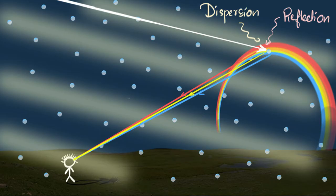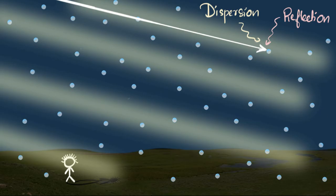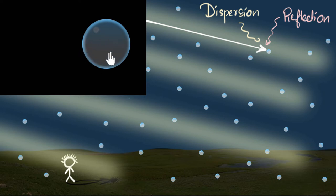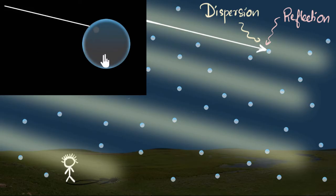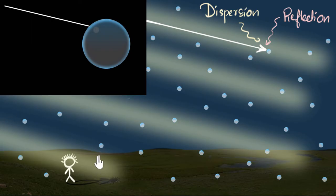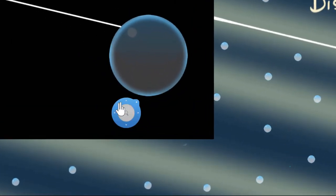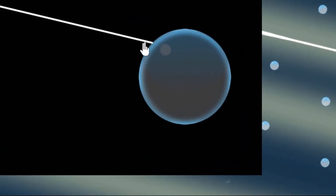Let's zoom into a particular raindrop and see what happens inside it. Here's the white light entering the raindrop. There are a lot of rays of light — let me just draw one ray entering the drop. The white light is going from a rarer medium to a denser medium, so some part of the light will refract into the drop and some part will reflect. I'm going to consider the refraction case. To draw the refraction, I need to first draw a normal.